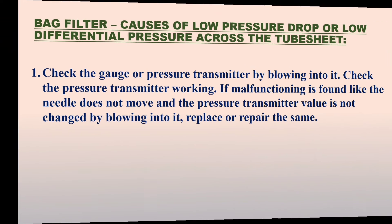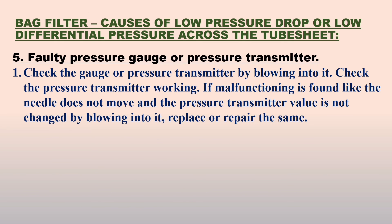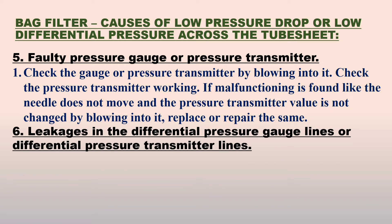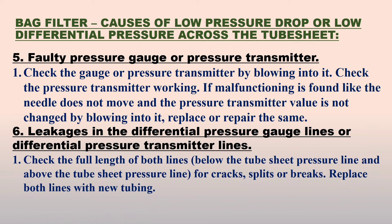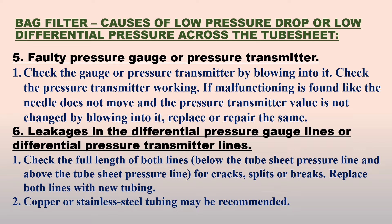One of the main causes of low differential pressure is a faulty pressure gauge or pressure transmitter. Point number 1: check the gauge or pressure transmitter by blowing into it and verify the pressure transmitter is working. If a malfunction is found — such as the needle not moving or the pressure transmitter value not changing when blown into — replace or repair the unit.